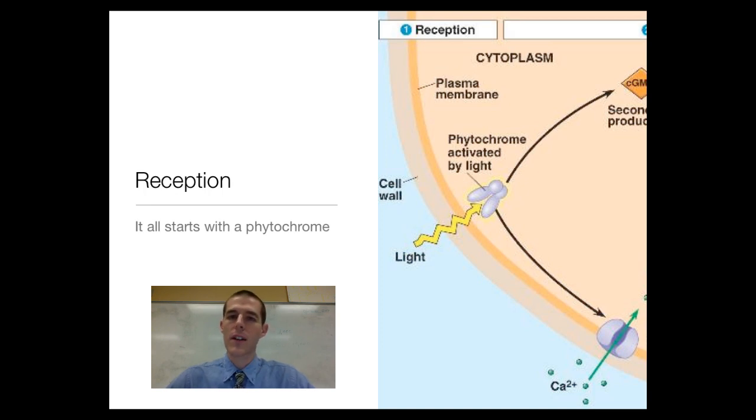This is the first phase of the signal transduction process, known as reception. If you remember back to when we were talking about cell signaling, reception is where a receptor receives a stimulus and starts to transmit it. For plants and for this process of de-etiolation, which is plant turning green and developing leaves, the receptor we are worried about is called a phytochrome. This is an example of phytochrome right here. Phytochrome's whole purpose is to receive light stimuli.